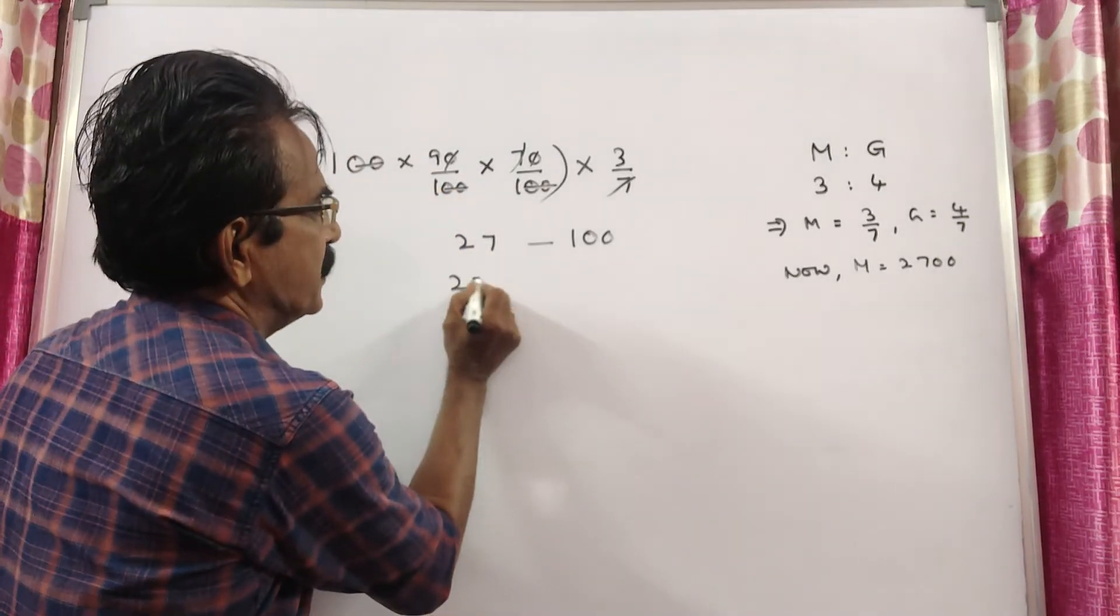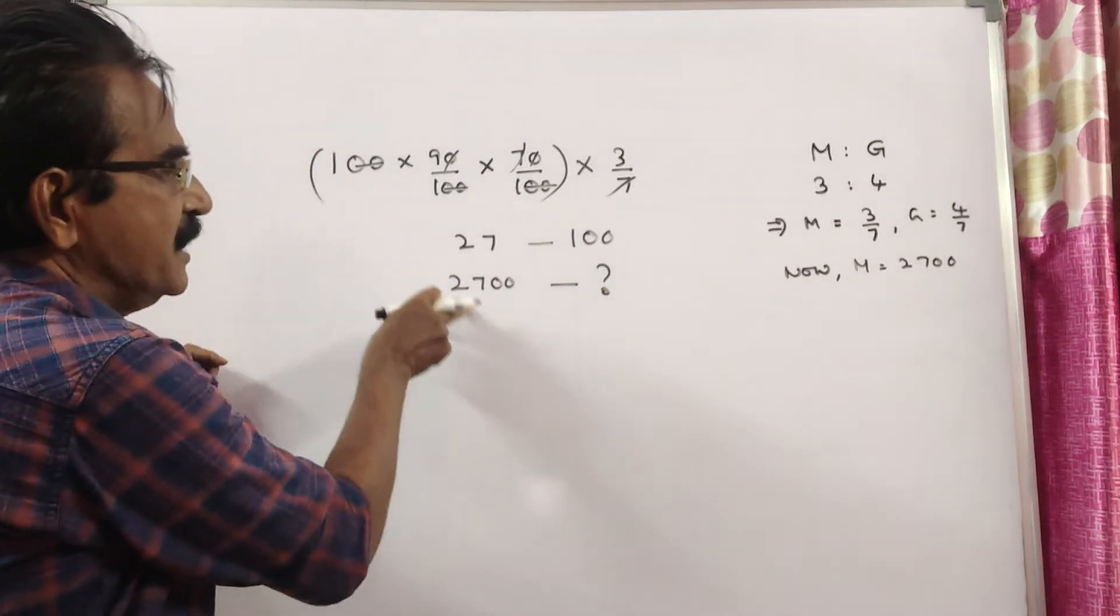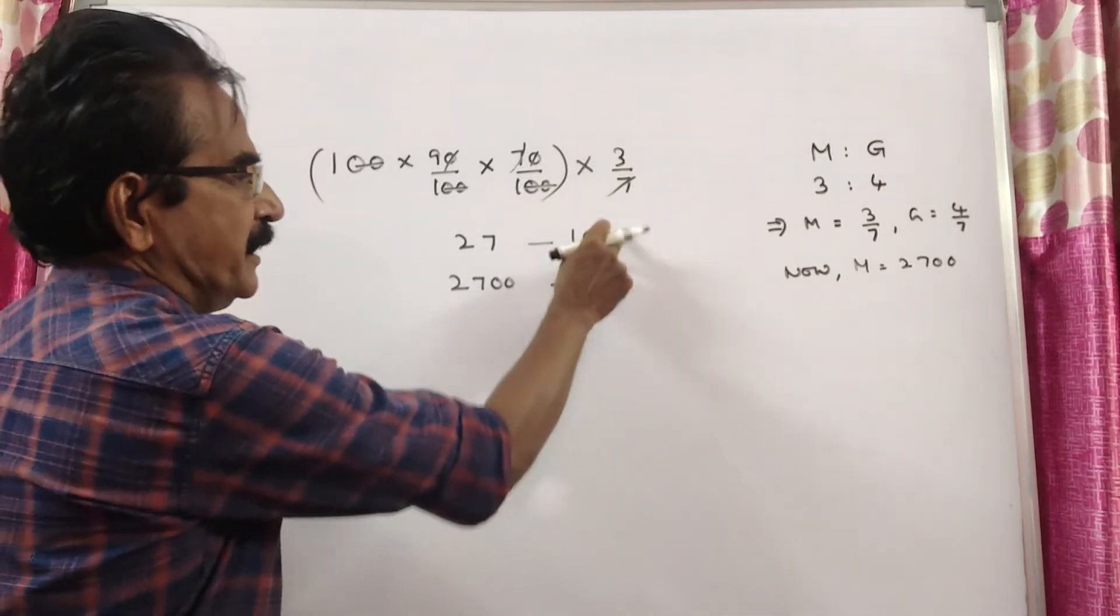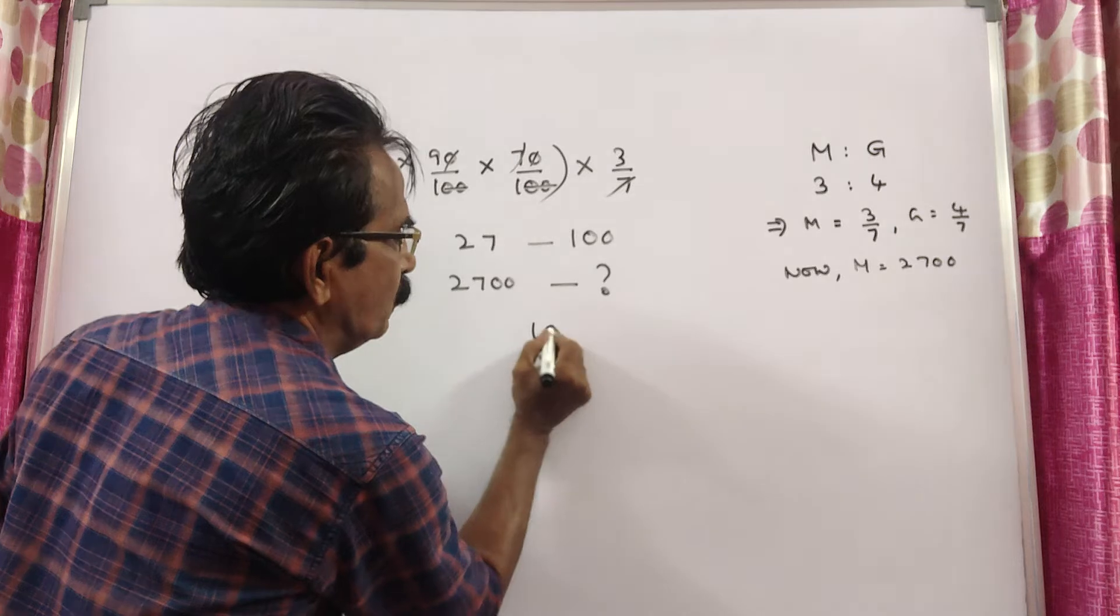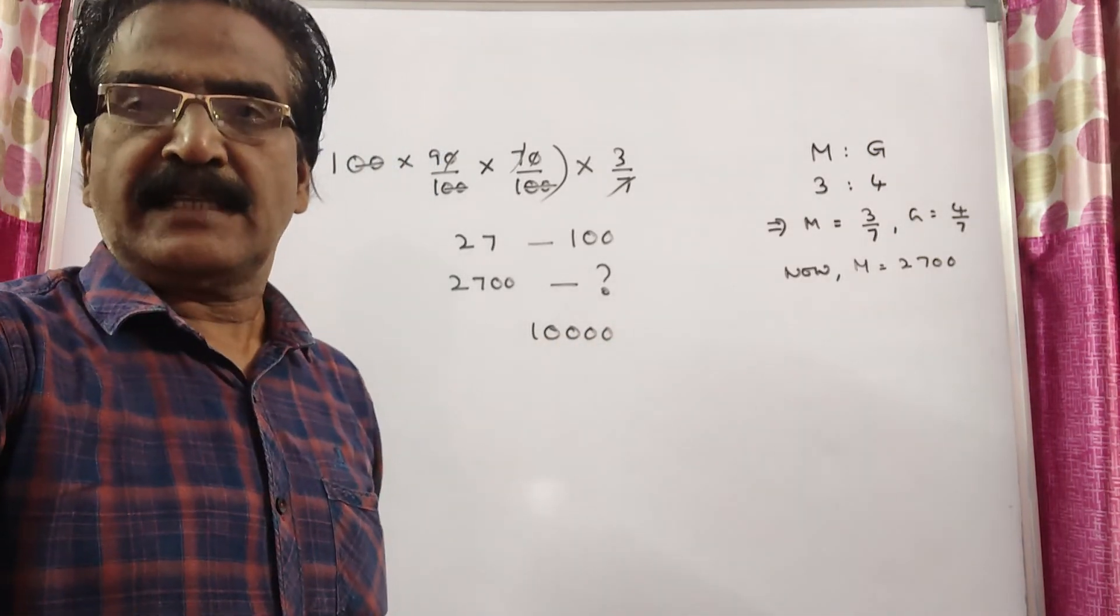If the expenditure on medicine is 2700, then what is the salary? This is 100 times, so 100 times 100 equals 10,000. The salary must be 10,000. Thank you.